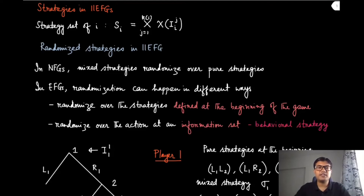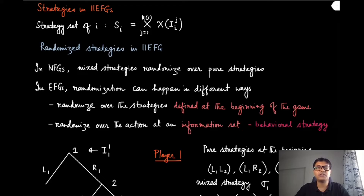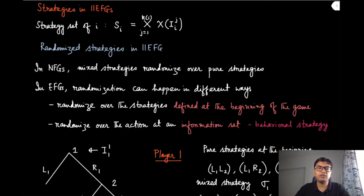In the context of extensive form games, we have so far discussed pure strategies. We haven't spoken about how we can mix strategies or probabilistically pick them. Unlike normal form games where there was only one kind of randomization — picking any pure strategy with some probability, which we call the mixed strategy.